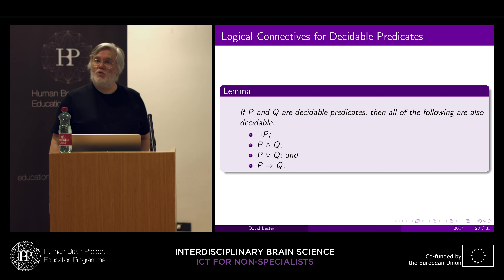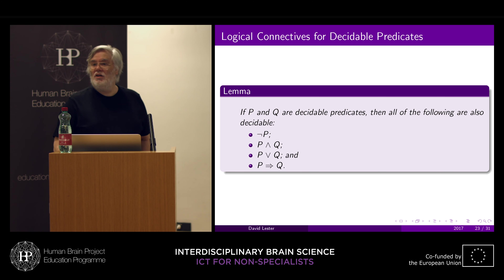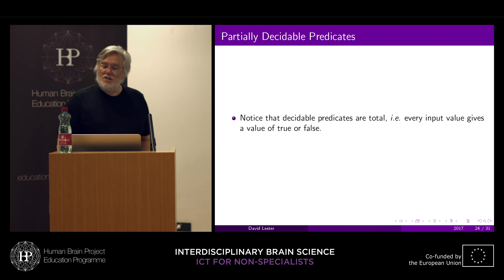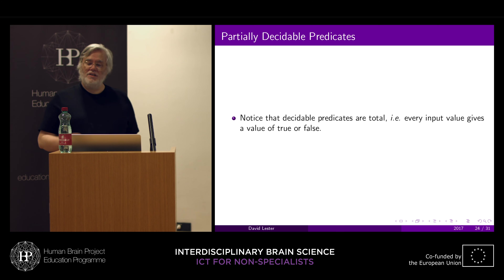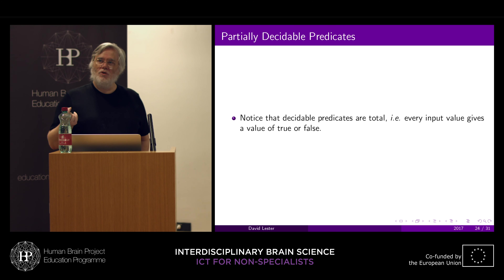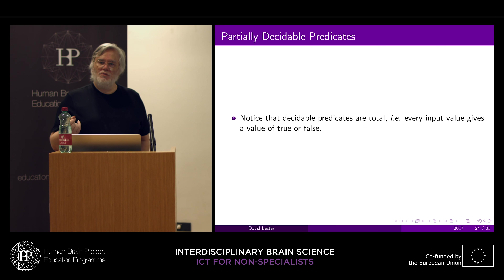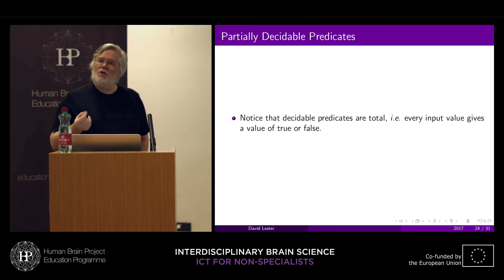Logical connectives for decidable predicates: if P and Q are decidable predicates, then all of the following are also decidable — not P, P and Q, P or Q, and P implies Q. Notice that decidable predicates are total: every input value gives a value of true or false.